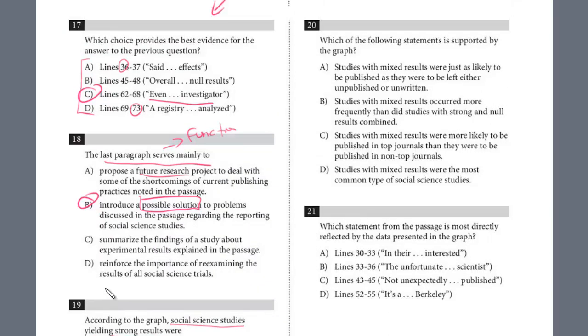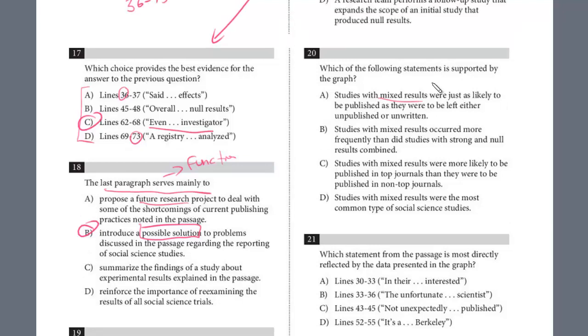And then we've got two more questions. They're both graph. Which of the following statements is best supported by the graph? So let's look. Studies with mixed results were just as likely to be published as they were to be left either unpublished or unwritten. So mixed results likely to be published as they were left unpublished or unwritten.